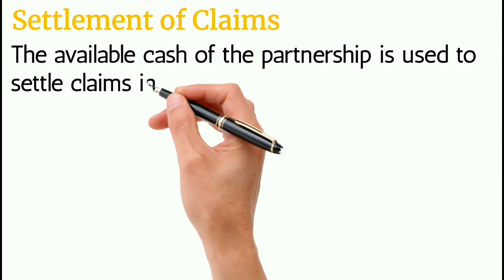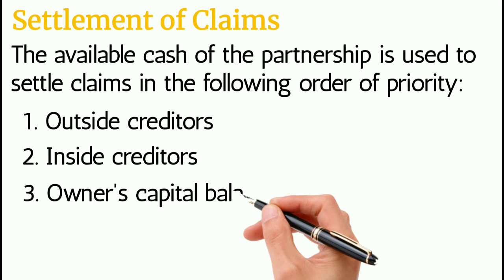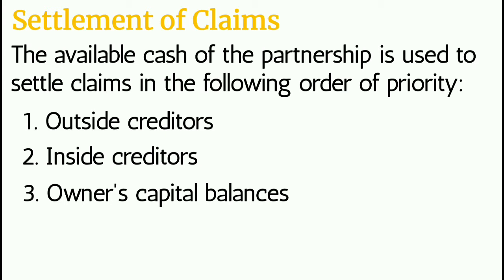Let us now proceed to settlement of claims. The available cash of the partnership is used to settle claims in the following order of priority: first, outside creditors; second, inside creditors; and third, owners' capital balances. That means the partnership must pay the outside creditors first. After paying the outside creditors, the partnership must pay the inside creditors. After paying both, if there is remaining cash, the remaining cash will be paid to the partners.